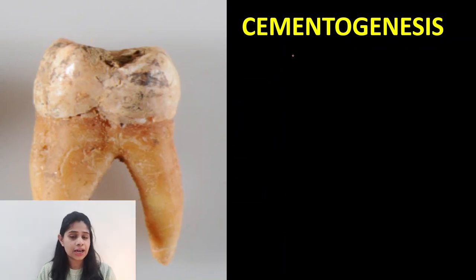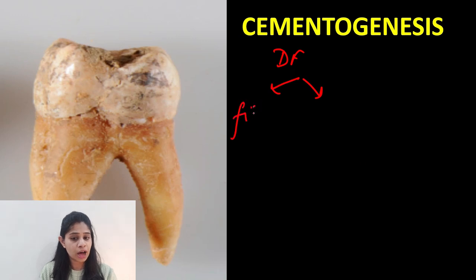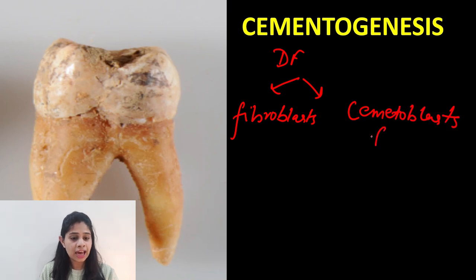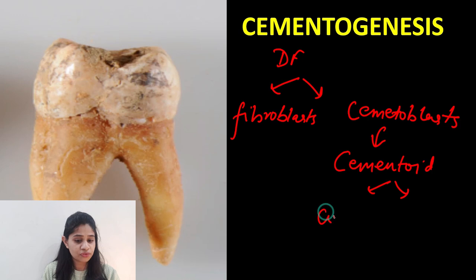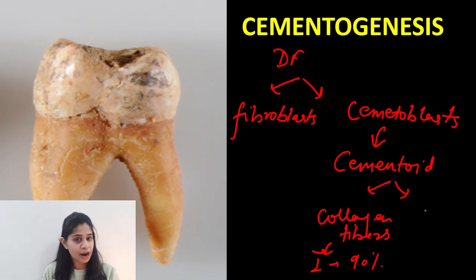In the earlier broadcast we discussed how the dental follicle gives rise to two populations: it gives rise to fibroblasts and it gives rise to cementoblasts. The cementoblasts in turn help in the secretion of cementoid tissue, which is basically immature or uncalcified cementum. This cementoid is made up of collagen fibers — almost 90% are type 1 in nature — and non-collagenous proteins.